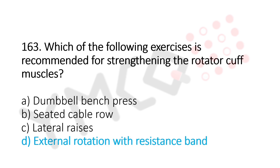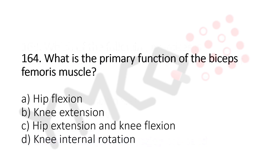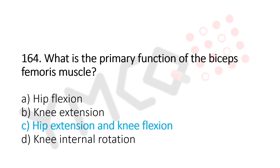Now, let's move to question number 164. What is the primary function of the biceps femoris muscle? Option A, hip flexion. Option B, knee extension. Option C, hip extension and knee flexion. Option D, knee internal rotation. And the answer is Option C, hip extension and knee flexion.